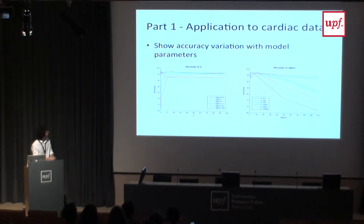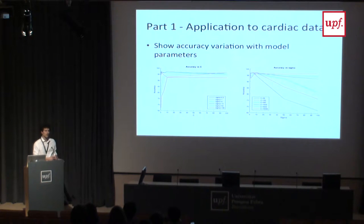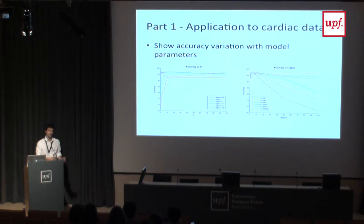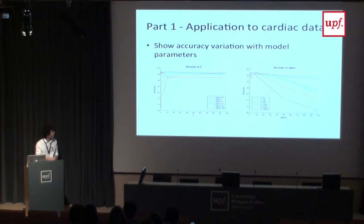We tested with cross-validation, dividing the data into five intervals, training with four and testing on the other one. We observed the accuracy of the testing depending on C. With increasing C, the accuracy reaches a plateau.